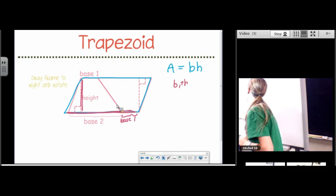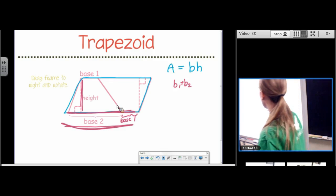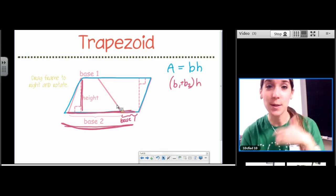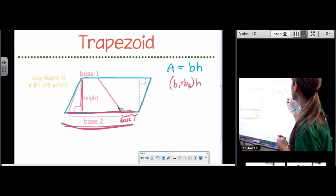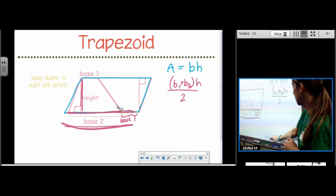And then you just multiply it by the height. Base times height. But then remember, I duplicated it, so I need to undo that. Divide by 2. Base 1 plus base 2 times the height divided by 2. So that's where the formula comes from for a trapezoid.